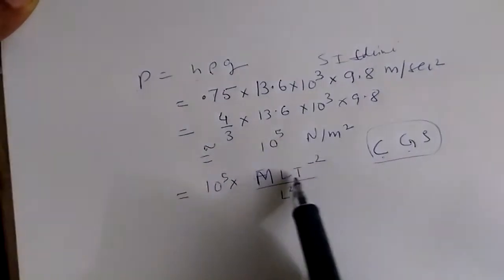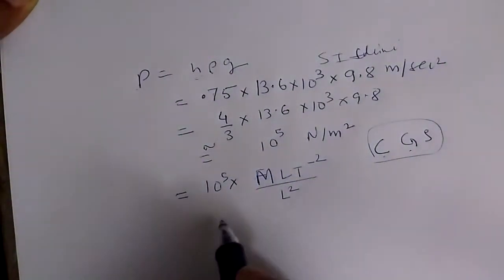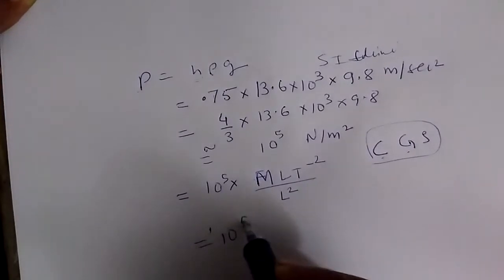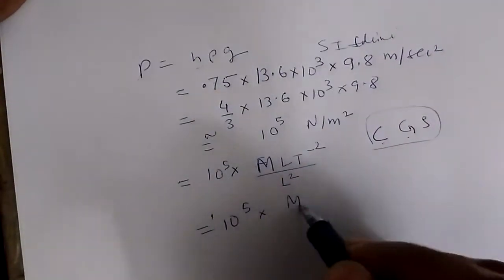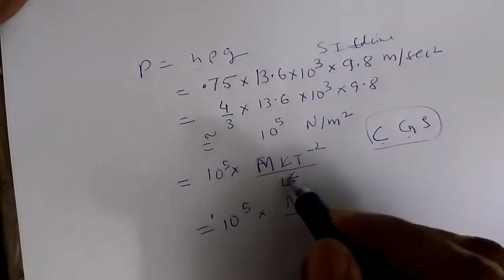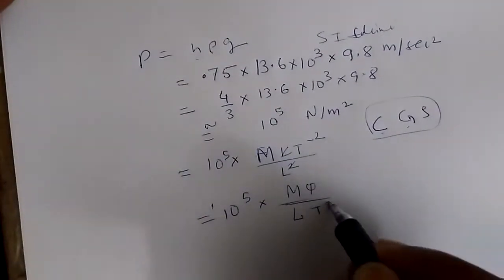So this, I have converted this Newton into, or mass, length, and time unit, so this is equal to 10 to the power of 5, multiplied by mass, and divided by, L cancels, L goes below, and T goes below T square.